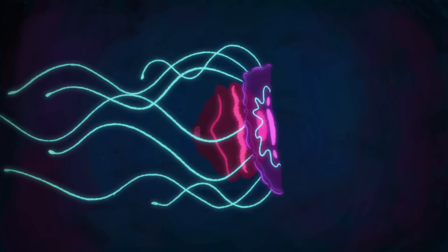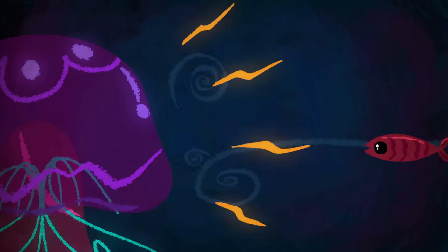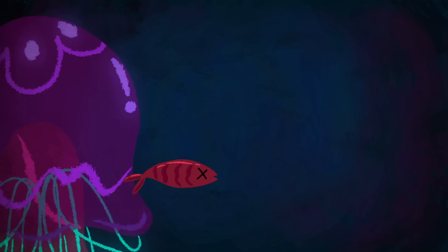The jellyfish can contract and relax their bells to propel themselves. They don't have a brain or a spinal cord, but a neural net around the bell's inner margin forms a rudimentary nervous system that can sense the ocean's currents and the touch of other animals.